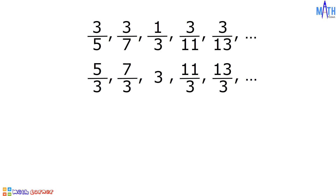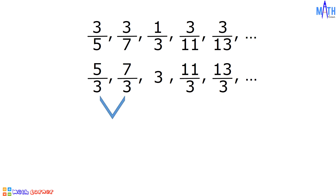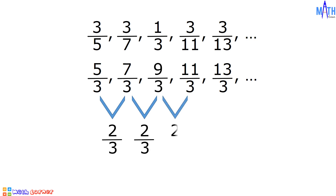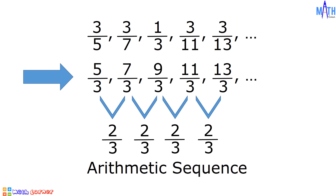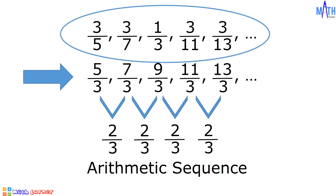Let us determine if this sequence is an arithmetic sequence. There is a common difference, therefore this sequence is an arithmetic sequence. And since this is an arithmetic sequence, 3/5, 3/7, 1/3, 3/11, 3/13, and so on is a harmonic sequence.